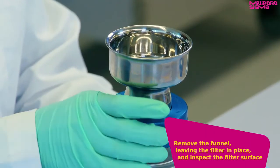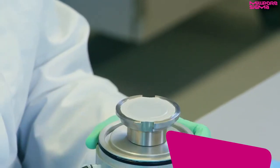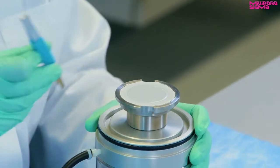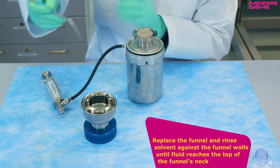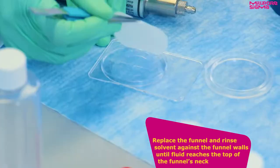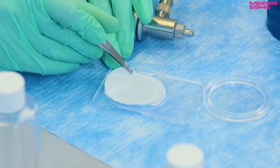Remove the funnel, leaving the filter in place, and inspect the filter surface. If the central area of the filter is pink and showing insufficient rinsing, replace the funnel and rinse solvent against the funnel walls until the fluid reaches the top of the funnel's neck. Work the syringe again to draw all the fluid through the filter.